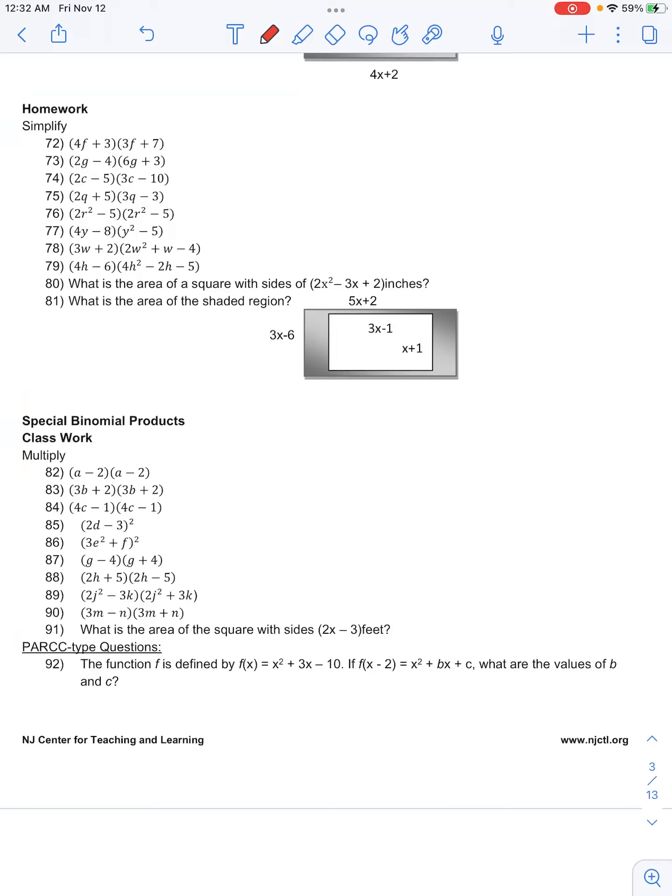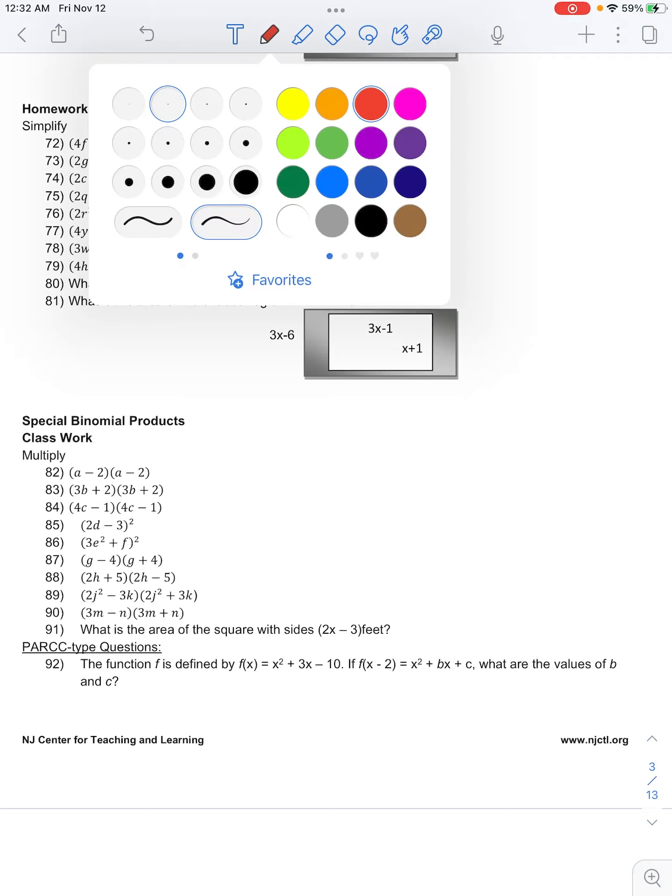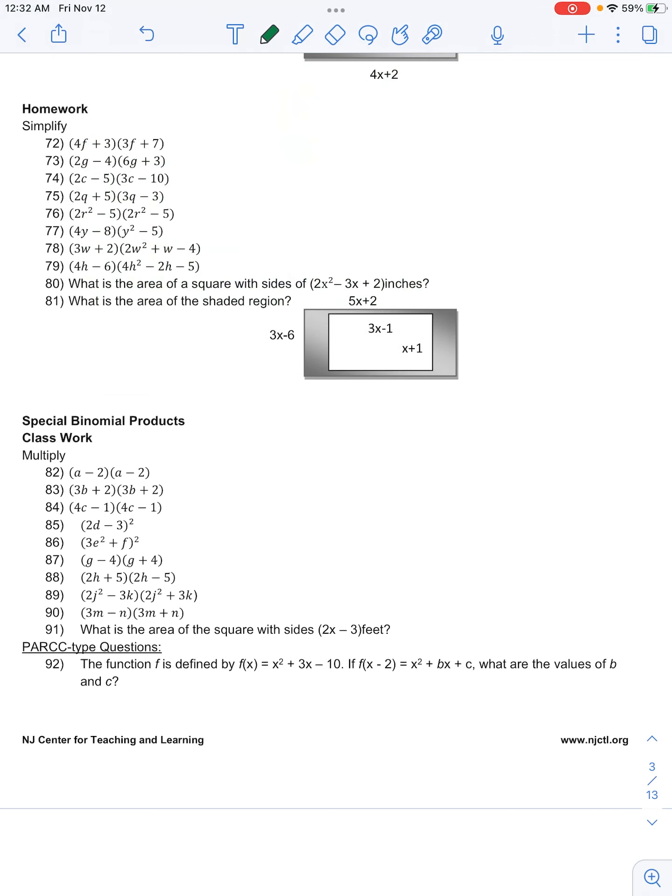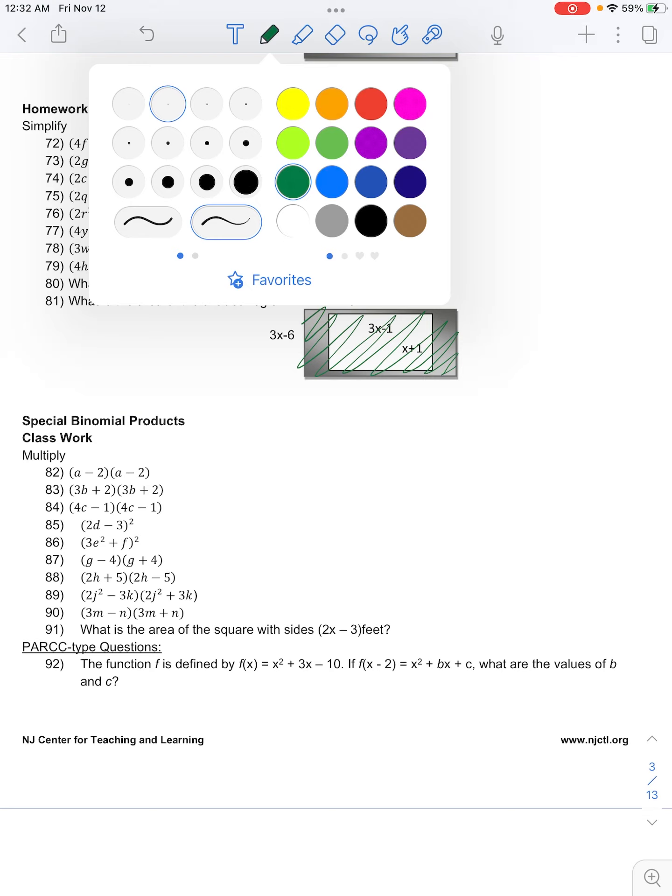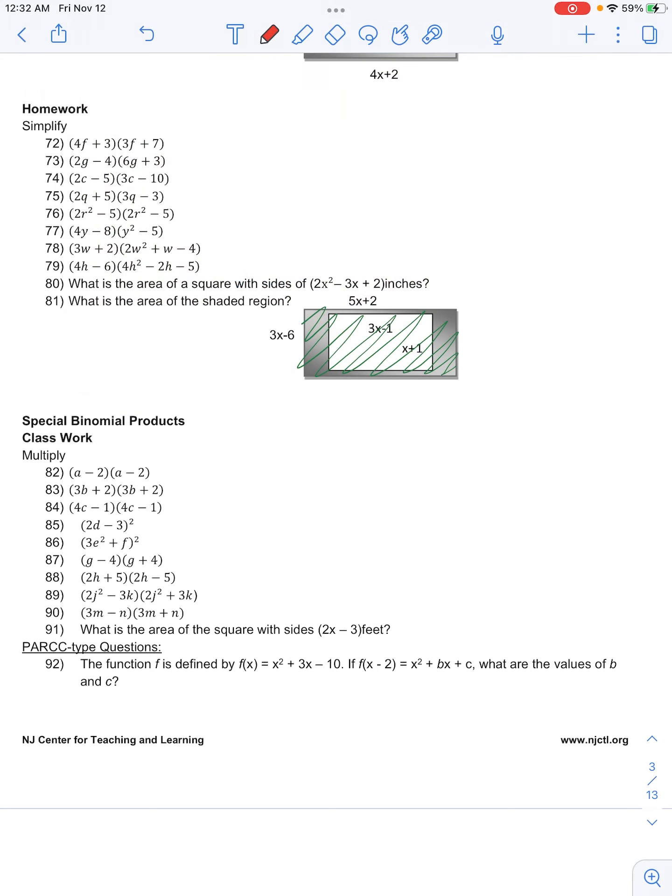Number 81 in your homework for polynomials asks for the area of the shaded region of the figure. If we notice, the area of the shaded region is going to be the area of the larger rectangle given by the green shaded minus the area of the smaller rectangle given by this red shading.